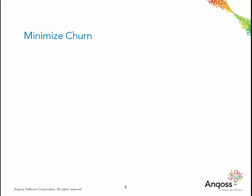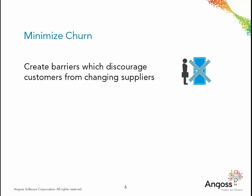The churn rate can be minimized by creating barriers which discourage customers from changing suppliers. These could be contractual binding periods, use of proprietary technology, value-added services, or unique business models.